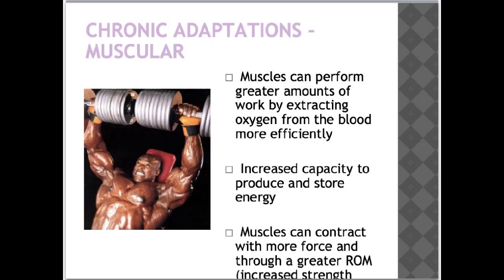Moving on to chronic adaptations in the muscular system: muscles can perform greater amounts of work by extracting oxygen from the blood more efficiently, there is increased capacity to produce and store energy, muscles can contract with more force and through a greater range of motion, and there are increases in muscle fiber size, otherwise known as hypertrophy.